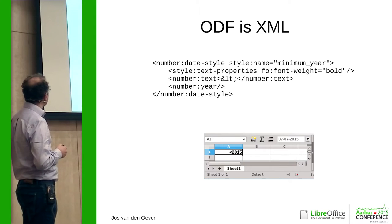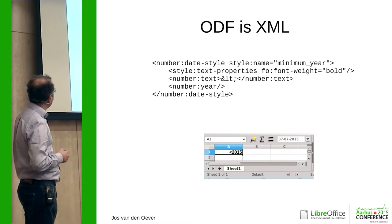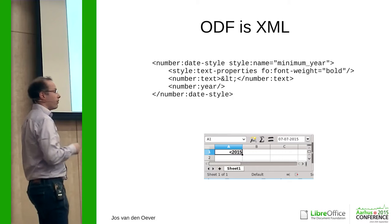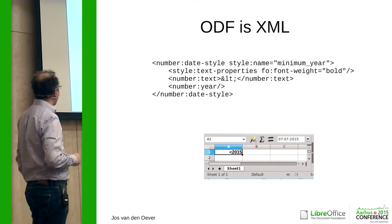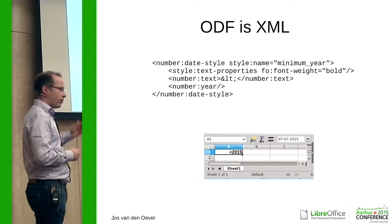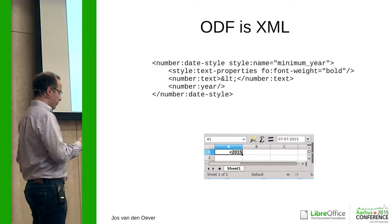What we're doing here is we make a date style, which we call 'minimum year'. It will show the year with a less-than sign in front of it, and it should be bold. This is a very simple thing we want to do. Here you can see it in action in Calc. So now in this presentation we're going to be writing this fragment using C++ code.